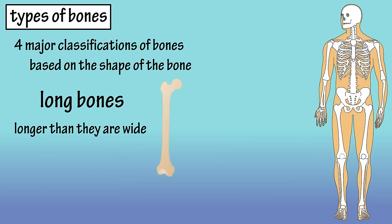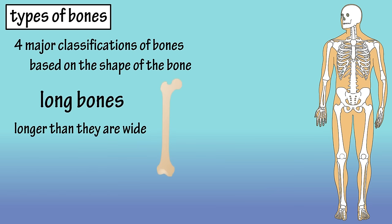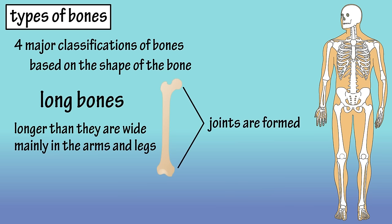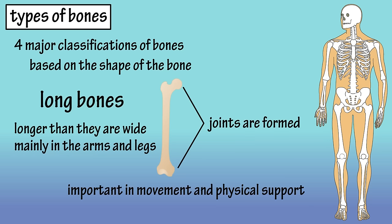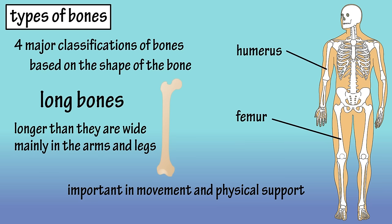Long bones are longer than they are wide and they are mainly located in the appendicular skeleton, or in the arms and legs. At each end of a long bone, a joint is formed. Long bones are important in movement and they support the weight of the body. Some examples of long bones are the femur or thigh bone, the humerus or arm bone, and the phalanges or the bones of the fingers.